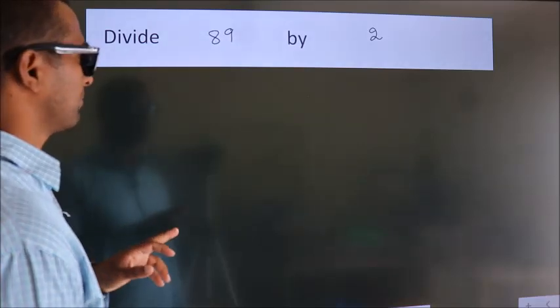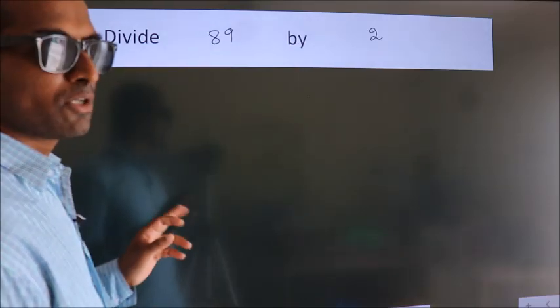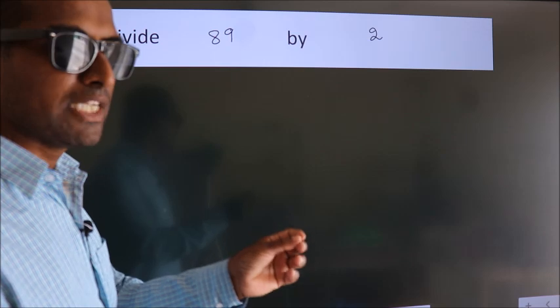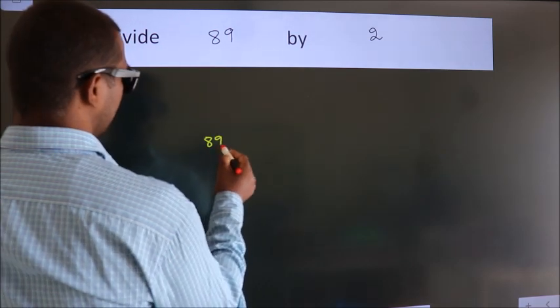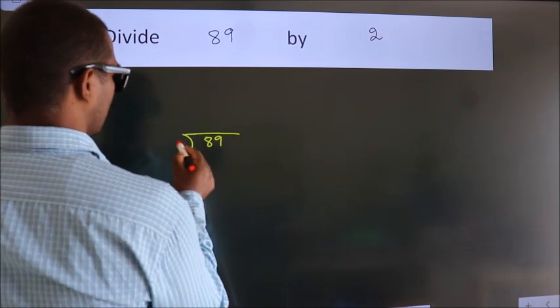Divide 89 by 2. To do this division, we should frame it in this way: 89 here, 2 here.